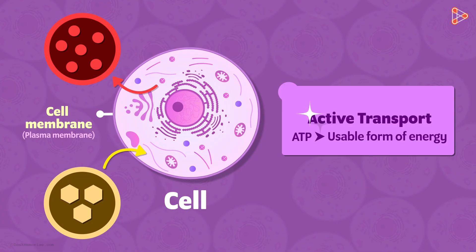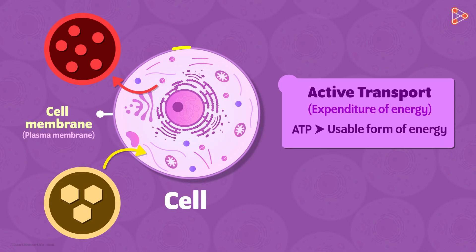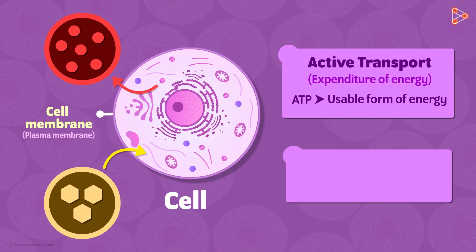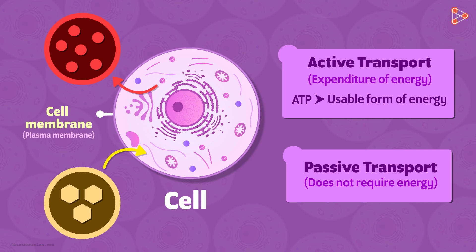Active transport requires expenditure of energy. The transportation is carried out by protein molecules present on the cell membrane. On the other hand, diffusion does not require energy — hence, it is a type of passive transport. So, movement of molecules without spending energy, as in the case of diffusion, is passive transport, while movement of molecules across the membrane with the expense of energy is active transport.